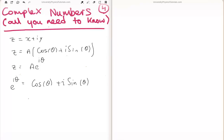Or we could write e to the minus i theta is cos theta minus i times sin theta.